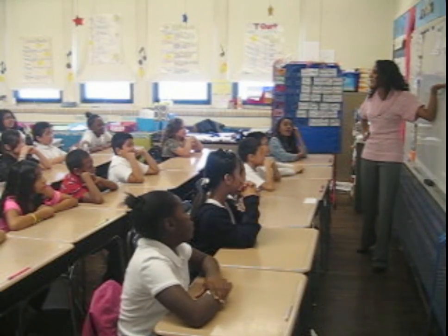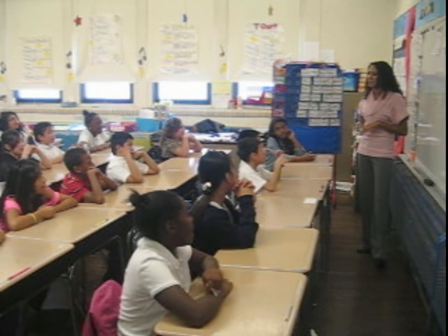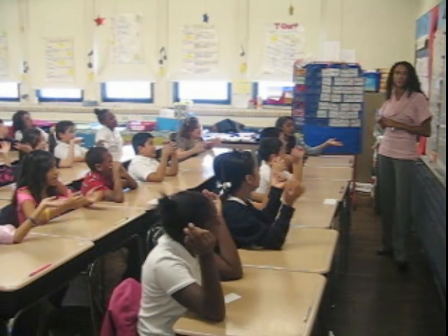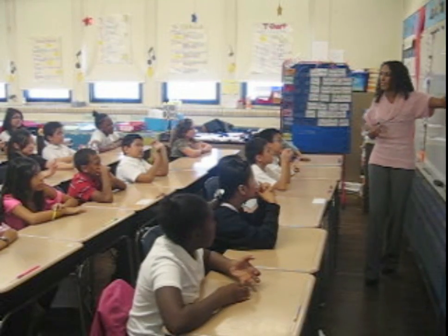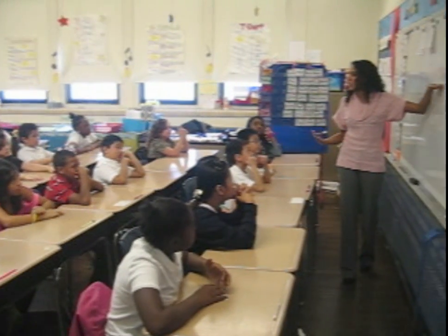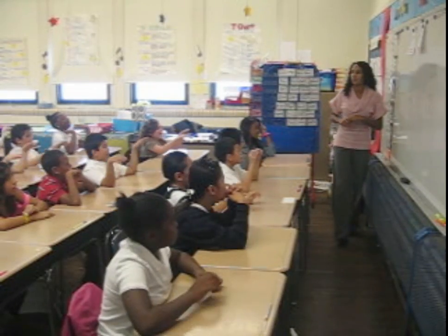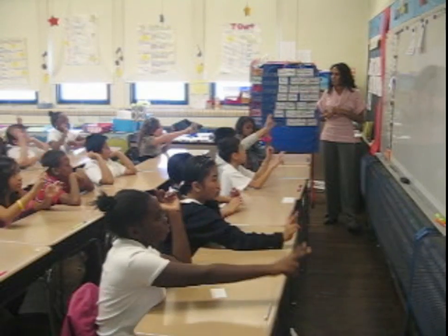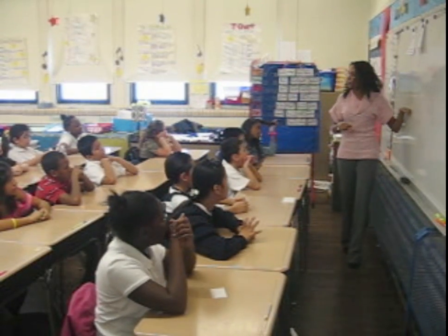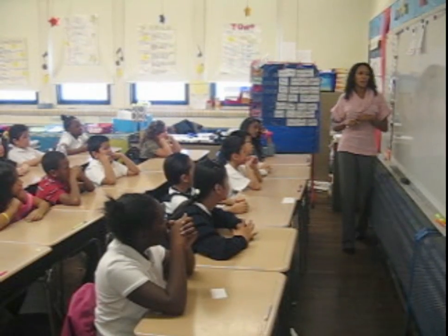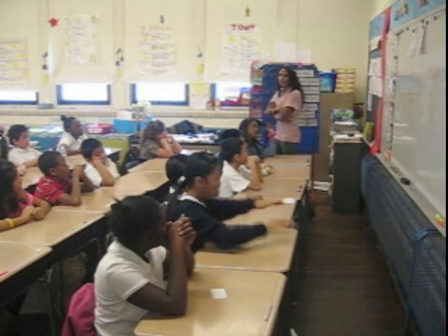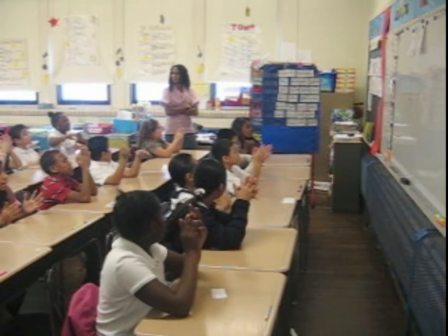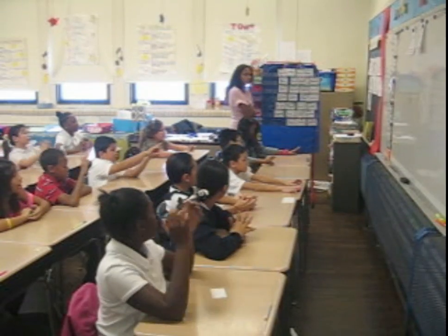Is 7 a prime number? Yes, it is a prime number because it only has two factors — one and that number, which is 7. Is 22 a prime number? No way! It is not a prime number because it has more than two factors. Is the number 36 a prime number? No way! The number 36 is not a prime number because it has more than two factors.